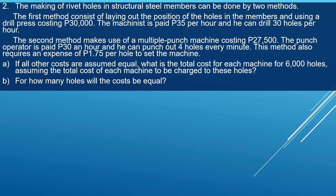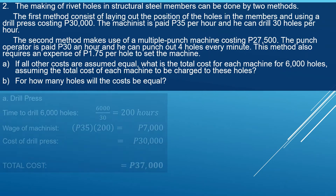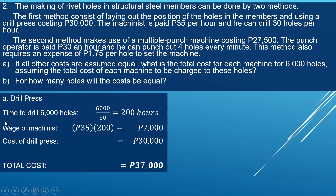For letter A, we compute costs for both machines. For the drill press, the time to drill 6,000 holes is 6,000 divided by 30 holes per hour, which equals 200 hours. The machinist's wage is 35 pesos per hour times 200 hours, equaling 7,000 pesos. Adding the cost of the drill press at 30,000 pesos, the total cost is 37,000 pesos.